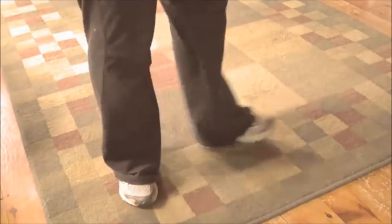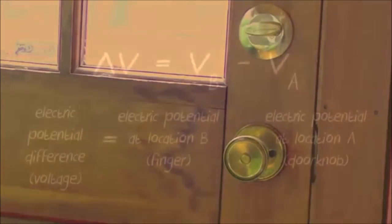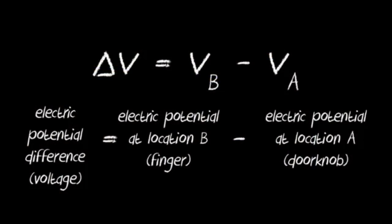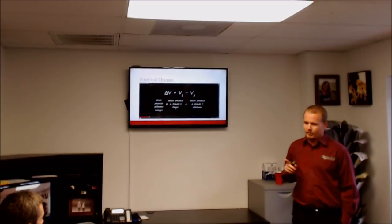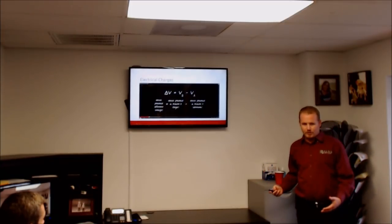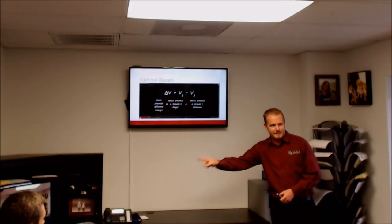Imagine you are shuffling along a carpet and reach out to touch the doorknob — zap! You get a mild shock. What's happened is the friction between your feet and the carpet has produced a large buildup of negative electric charge on your finger. This creates what is known as electric potential difference, or voltage, between your finger and the doorknob. If the electric potential difference is large enough, a sudden flow of current, called an electric discharge, will occur.